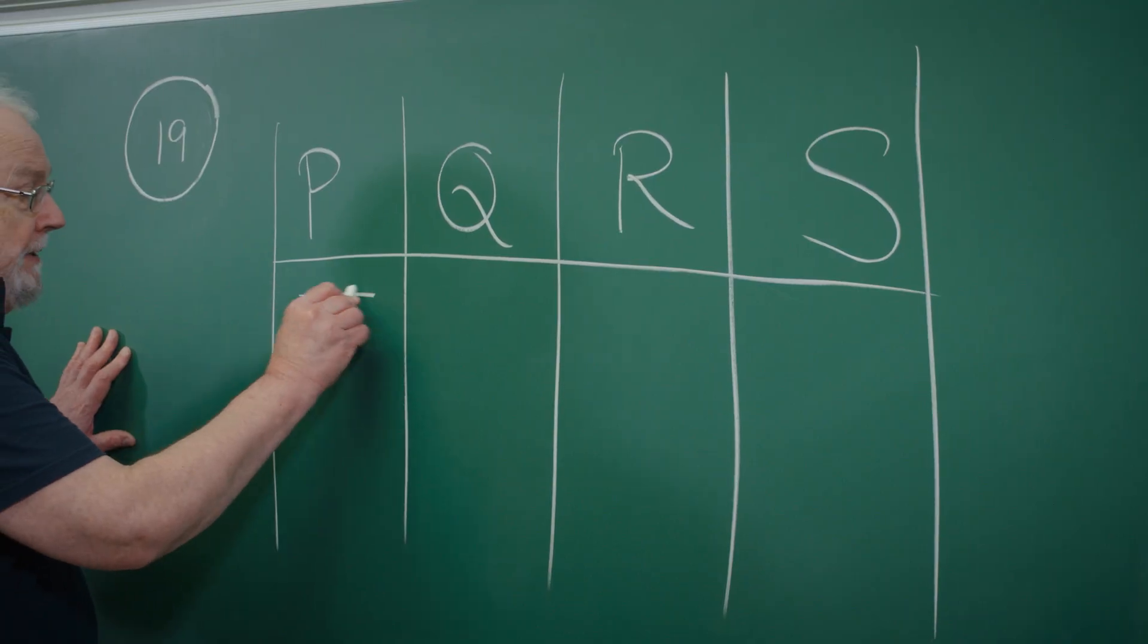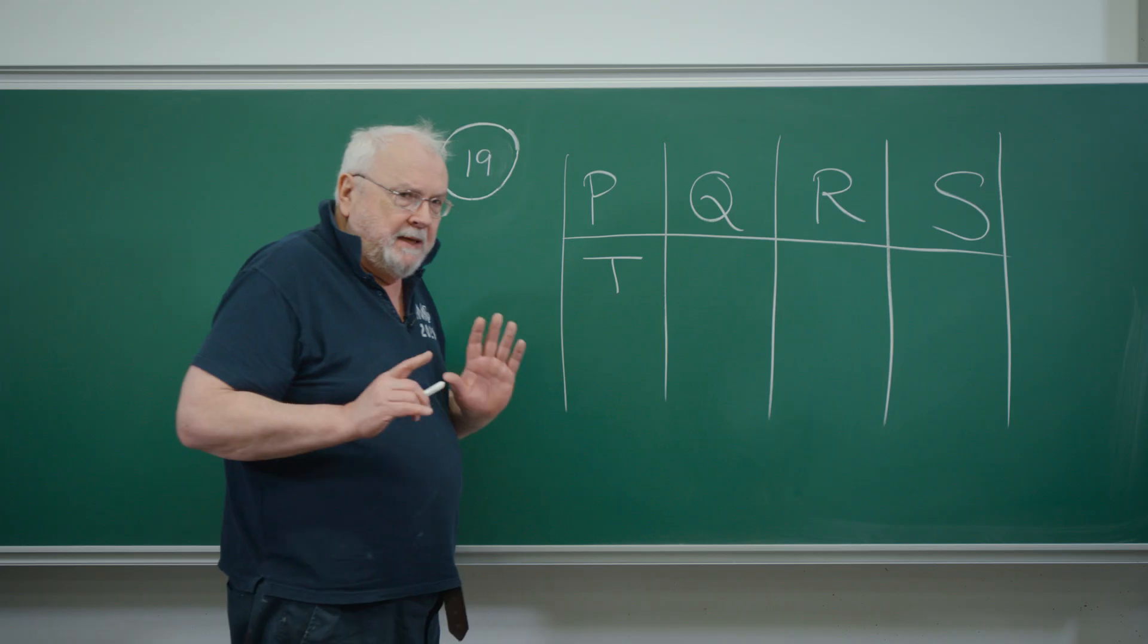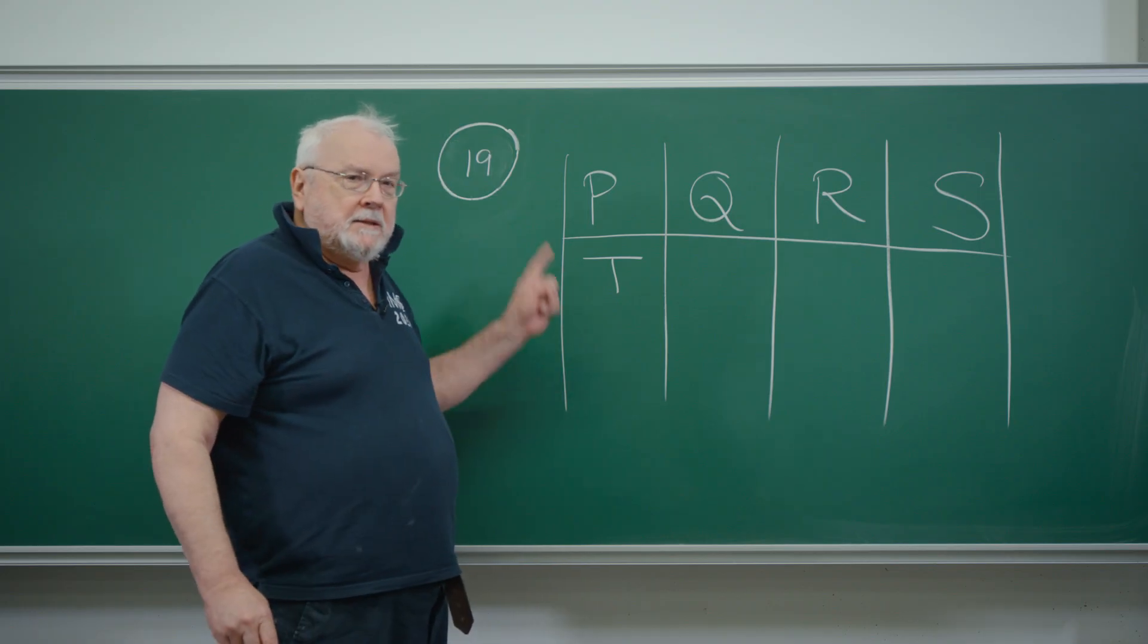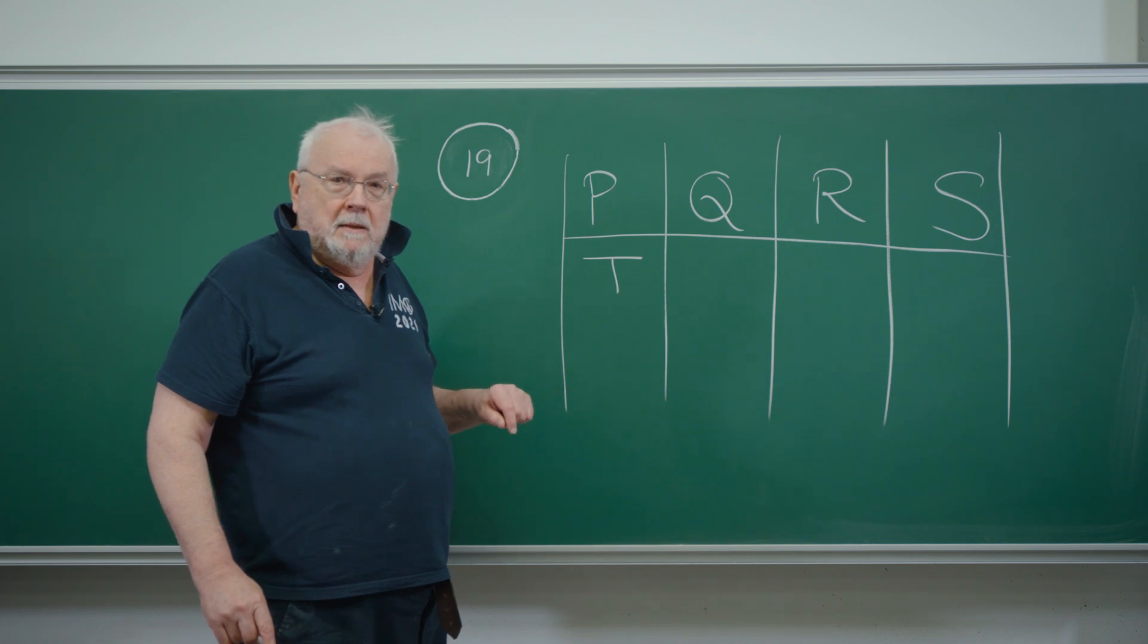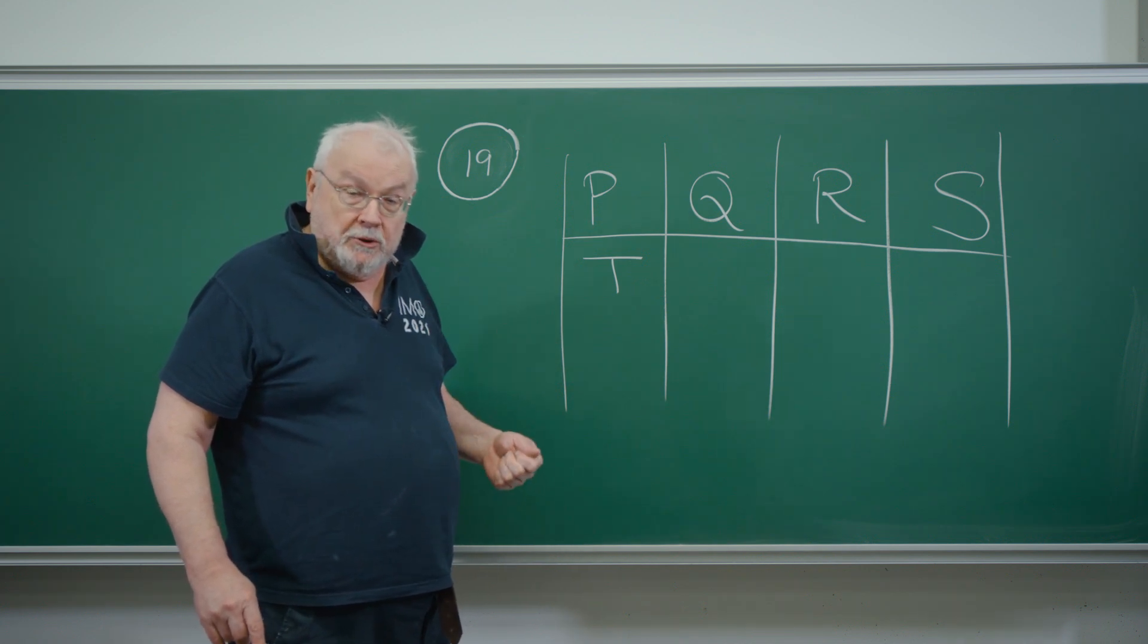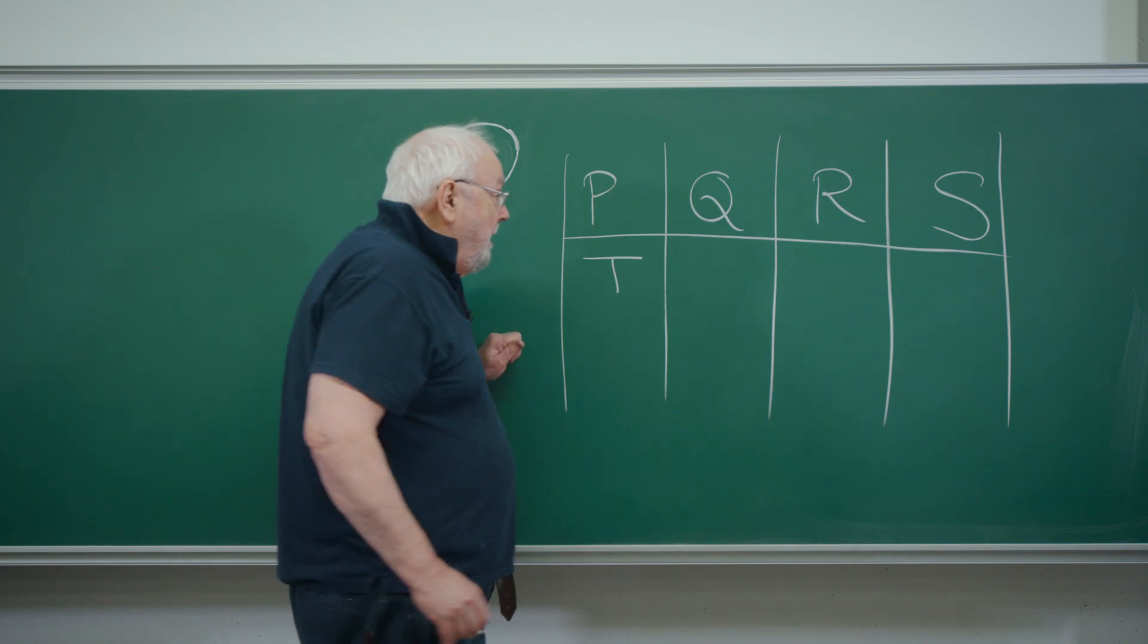So P might be a truth-teller. Just suppose that P is a truth-teller. P says that Q is a liar. But P is a truth-teller, so P is telling the truth, so Q is indeed a liar.